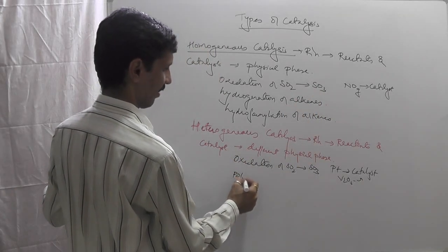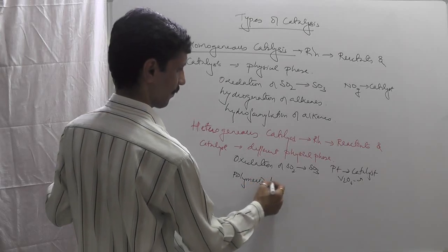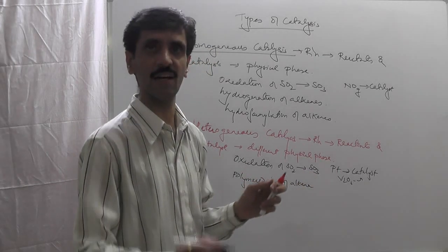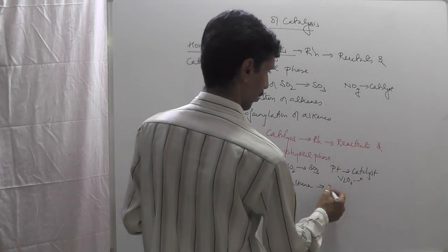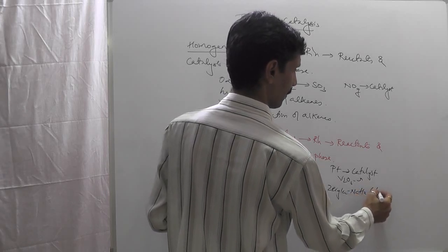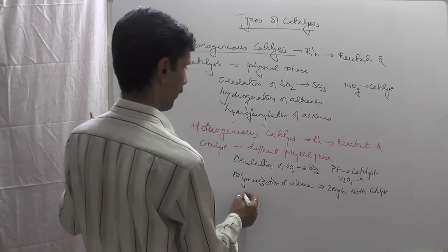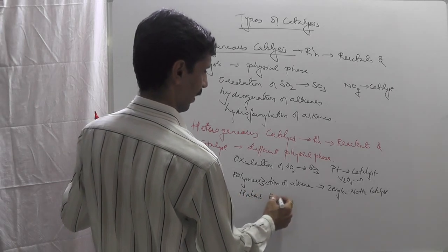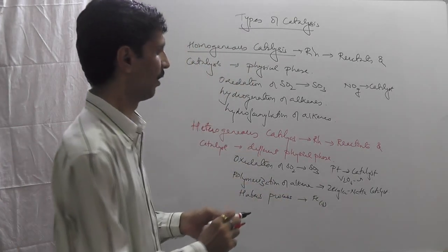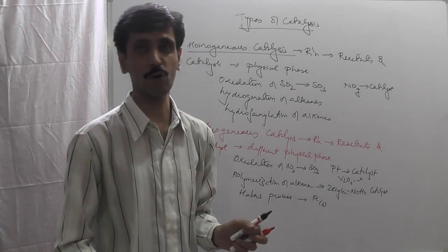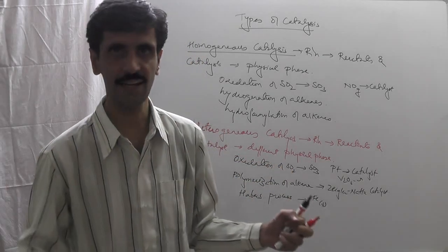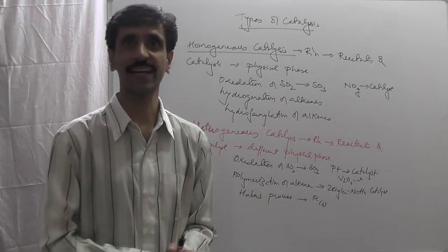Another example of heterogeneous catalysis is the polymerization of alkenes — for instance, ethylene gives polyethylene using the famous Ziegler-Natta catalyst. Haber's process for the manufacture of ammonia is also a classic example: it uses finely divided iron in the solid state, while nitrogen and hydrogen are in the gas phase. So the catalyst and reactants are in different physical states.